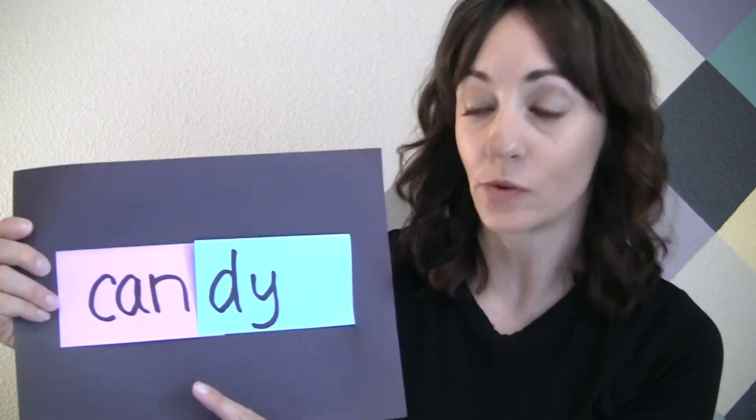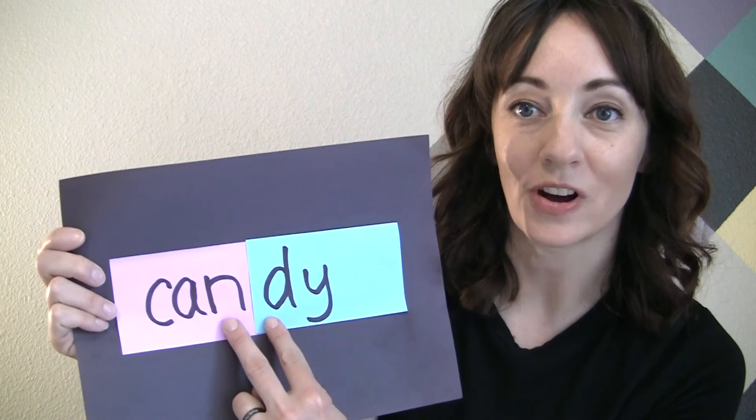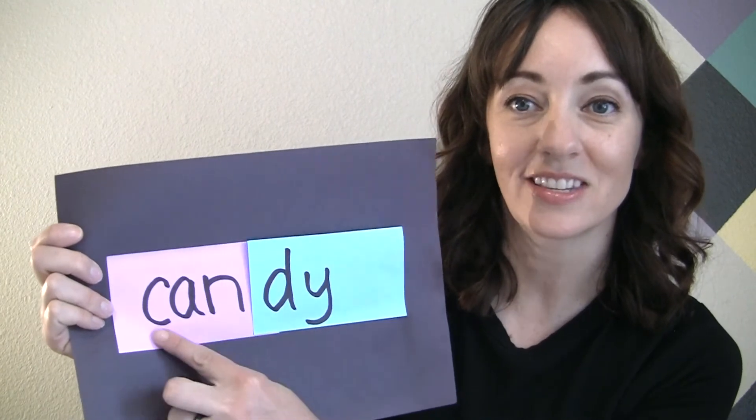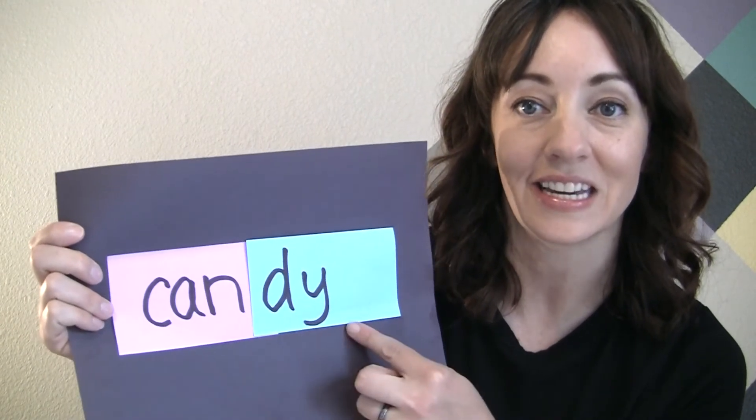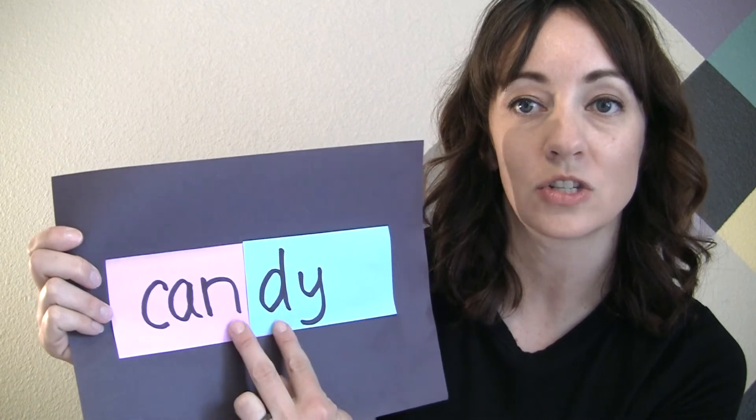In the words that we're practicing today, all the syllables are going to break between two consonants. This is the word candy. Notice the syllables breaking between these two consonants.